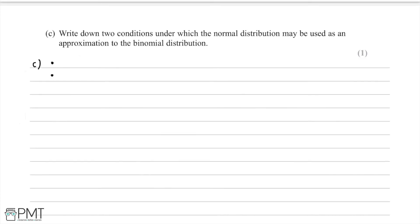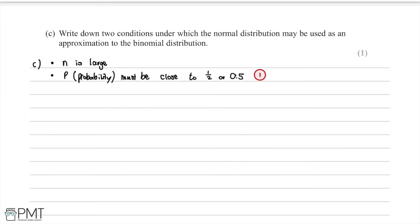In part C we're asked to write down two conditions under which the normal distribution may be used as an approximation to the binomial distribution. The first condition is that N is large, and the second is that P, the probability, must be close to one half. We get one mark for stating both of these two key points.